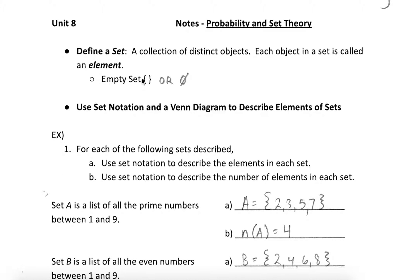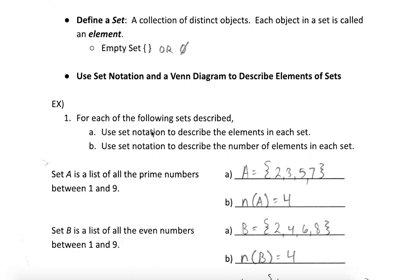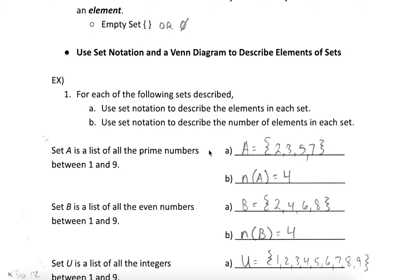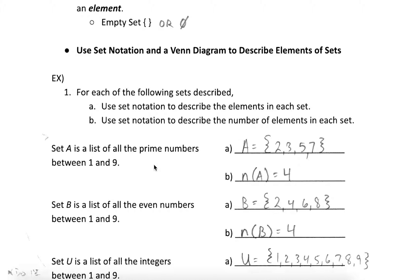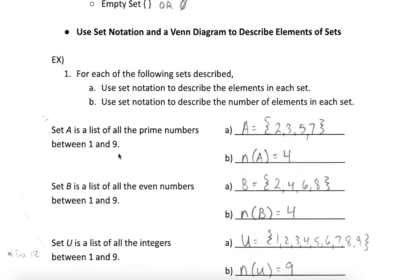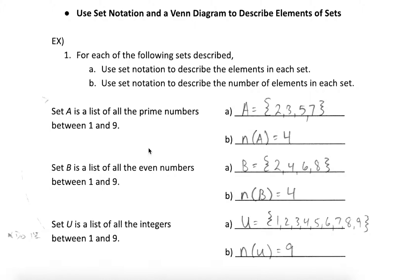So our set notation is going to involve these braces. We're also going to name sets. We can name them using capital letters. And we can group things together and then talk about the relationship. So let's start off with just coming up with a few sets here. We'll start off with what's called a universal set, something that is a collection of everything that we might want to group up. So we're going to establish that as set U.